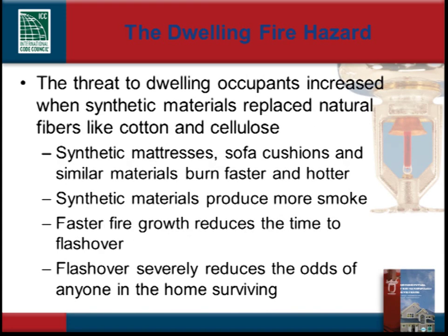Not only are homes constructed differently, but the materials we use to furnish and decorate our homes have changed also. The typical fuel load found in dwellings averages around 10 pounds of combustible materials per square foot. While the average fuel load has remained about the same, the ease of ignition and rate of heat release from furniture and furnishings has vastly increased. Residential fire sprinklers are designed to have a fast response to fire and routinely operate in one minute or less, well before the flashover stage is reached — making them capable of saving victims who are even sleeping in the room of fire origin.